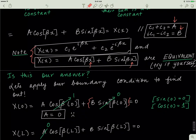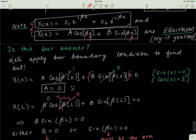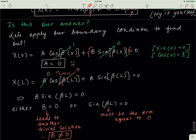Applying the second boundary condition at x equals L: since a equals zero, that term disappears, leaving b times sin(beta L) equals zero. This means either b equals zero or sin(beta L) equals zero. If b equals zero, that gives a trivial solution, which is physically unacceptable. So b cannot be zero — therefore sin(beta L) must equal zero.